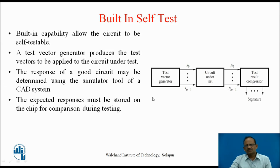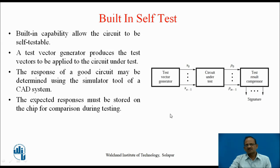The figure shows a general arrangement required. A test vector generator produces the test vectors which are to be applied to the circuit under test. The responses received from the circuit are to be compared with the expected outputs for all these test vectors. The response of a good circuit may be determined using a simulator tool of a CAD system. These expected responses must be stored on some chip for comparison during testing.